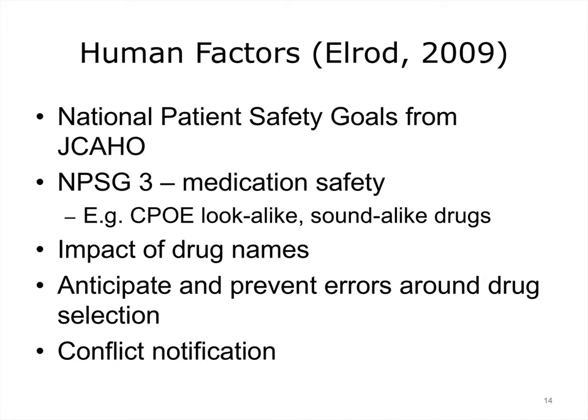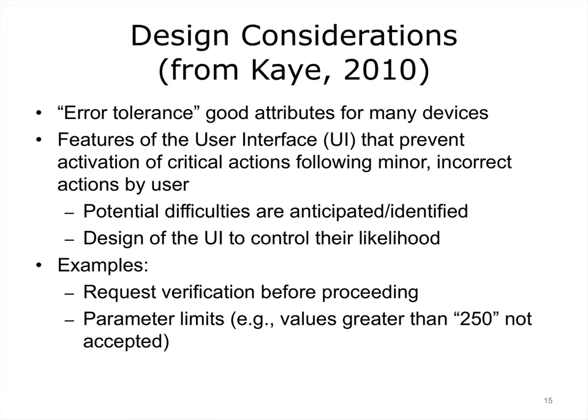There are several resources and recognized areas in which errors in human factors are being studied. The Joint Commission Accreditation of Hospital Organizations (JCAHO) has formulated national patient safety goals, including medication safety. Designers of CPOE systems have devised ways to distinguish drugs in pick lists that otherwise look and sound alike. Decision support systems are especially focused on notifying the clinician in case of a conflict of an ordered drug with other drugs or with allergies. Approach to design should include building error tolerance into the system, redundancy, and prevention of critical actions after minor errors by the user — as seen in everyday computing, for example, when a screen asks 'Are you sure you want to delete this file?' to ensure that a simple slip of the mouse does not create major difficulties.